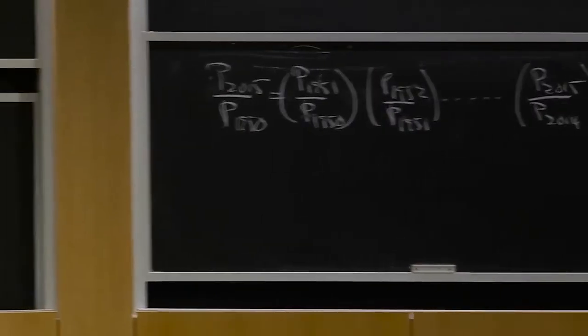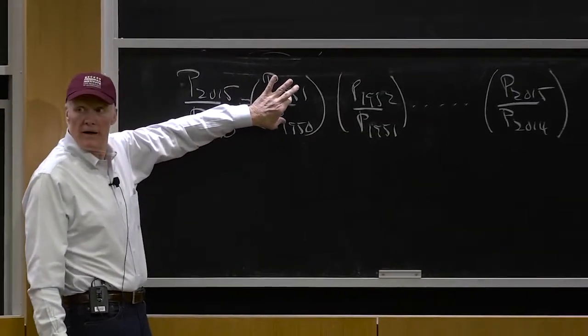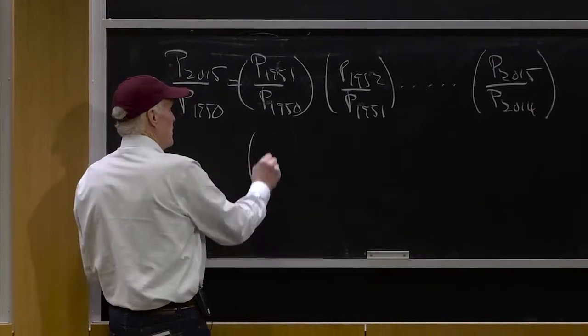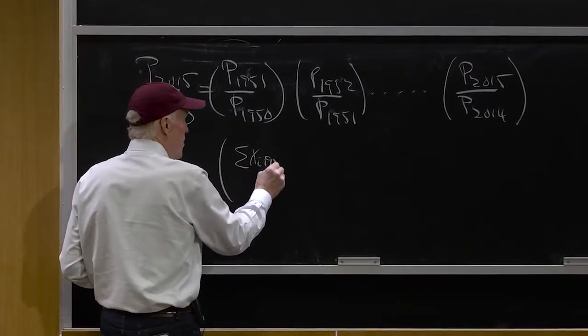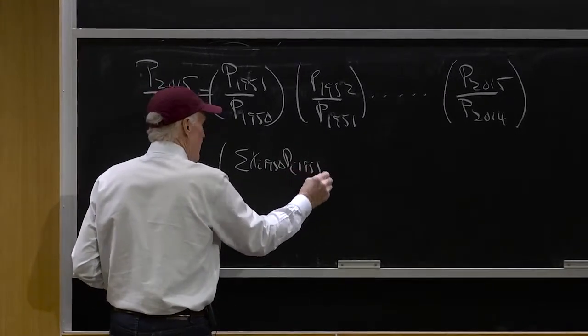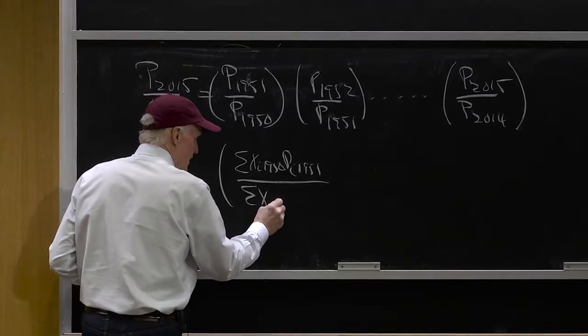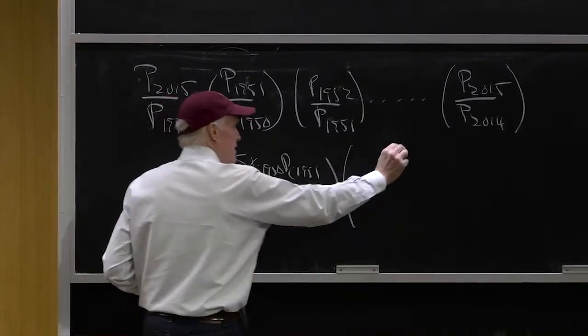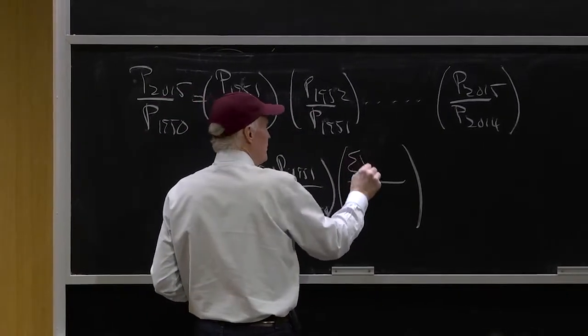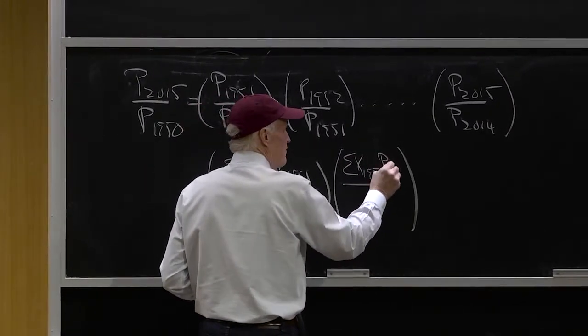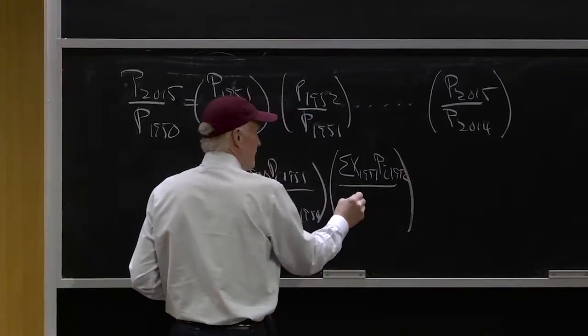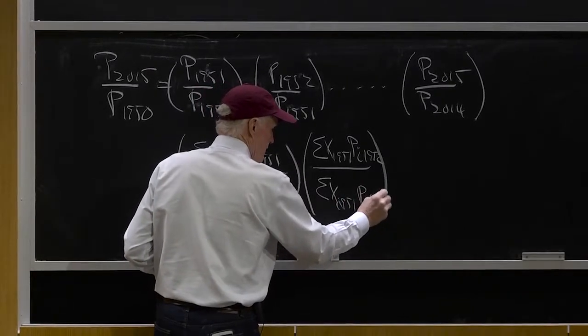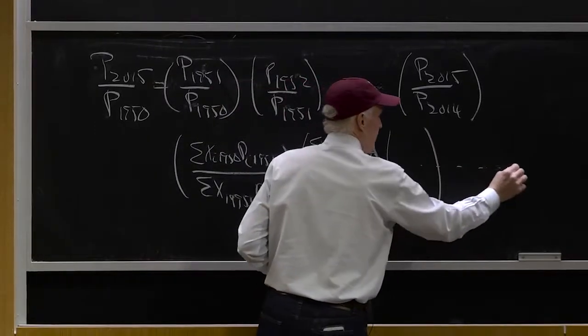I could then say, let me approximate this change by the bundle from that period in time. So you could, for example, use sum of the XI 1950 PI 1951 divided by the sum of the XI 1950 PI 1950, and then do the same here, except now I'll use the 51 bundle to go from 51 to 52. And then just keep going like that all the way on through.